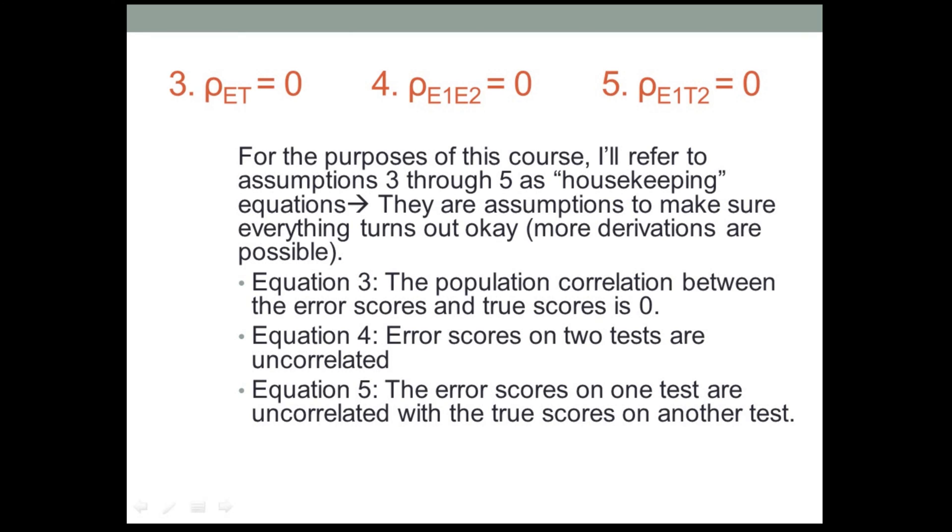If errors are, if you take equation four, for example, if errors are random, then it makes sense that errors on one test might not be correlated with errors on another test, or to move back to number three, equation three, since errors are, again, random. It makes sense that across a group of people, the errors will be uncorrelated with the true scores.